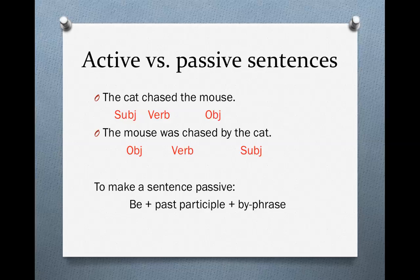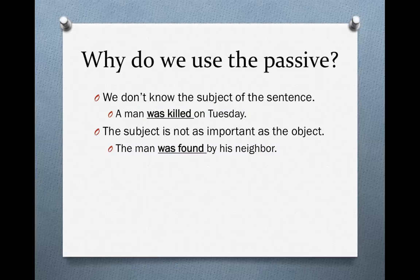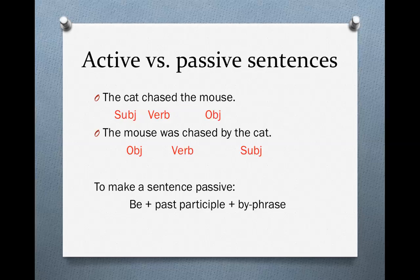Now let's talk about active versus passive sentences. Active sentences are like the sentences I showed you before — all of those sentences are active sentences. The subject does the verb to the object. So we have 'The cat chased the mouse.' A passive sentence would be like this: 'The mouse was chased by the cat.' In a passive sentence, we change things a little bit. The object becomes the subject, and the subject becomes the object. The meaning is the same — there is no difference in meaning between these two sentences; we've just changed the order of the words.